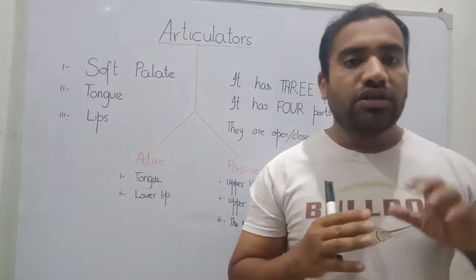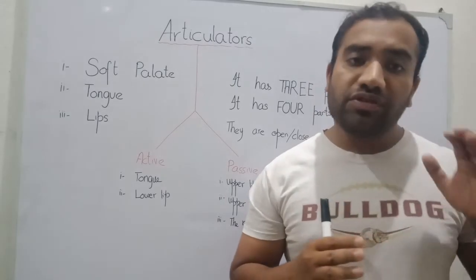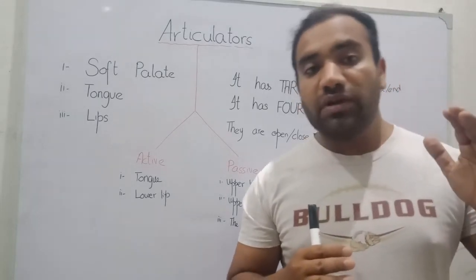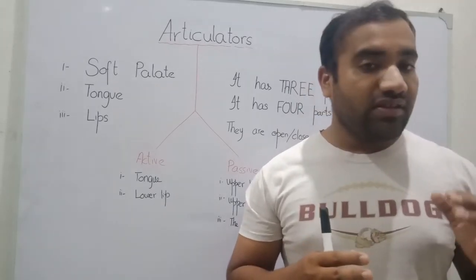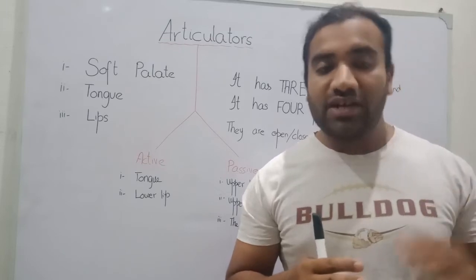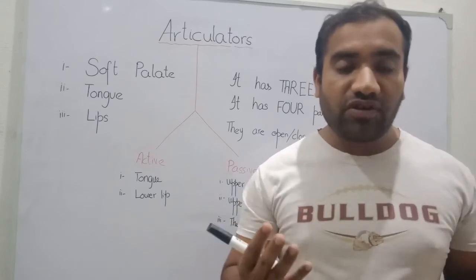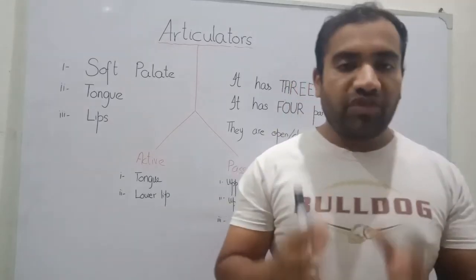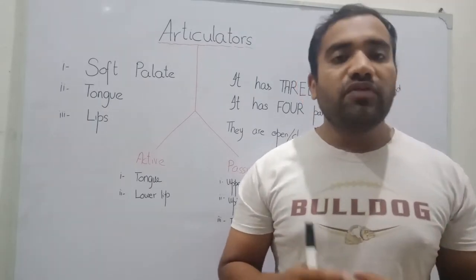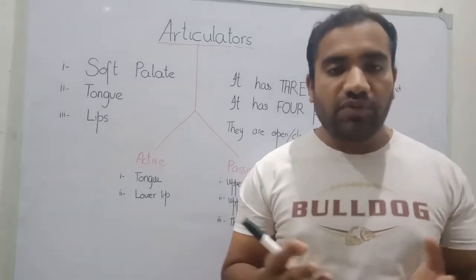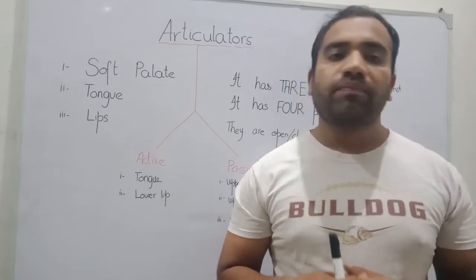When your tongue touches the front of the palatal, it produces a different sound. When your tongue comes close to the middle of the palatal, it produces a different sound. And if your tongue moves and touches the back of the palatal, it will produce a totally different sound. So we can say that the passive articulator doesn't move, while the active articulator moves. When anybody wants to speak, he or she has two types of articulators — one is the passive articulator and the other is the active articulator.